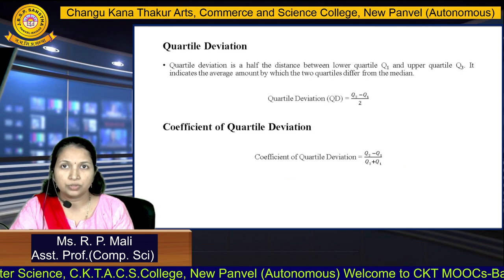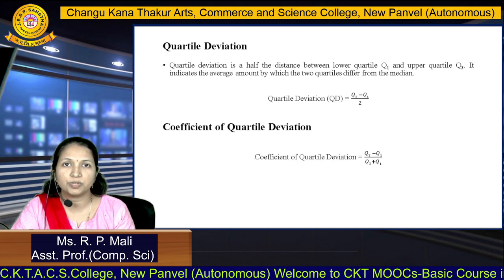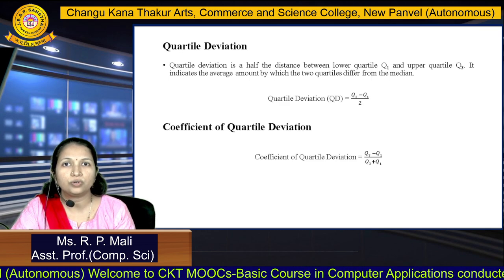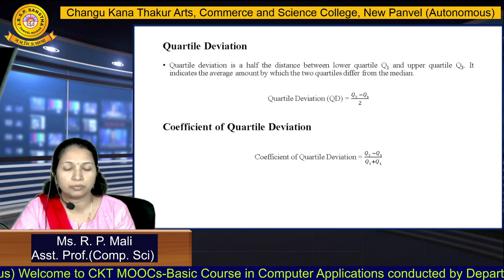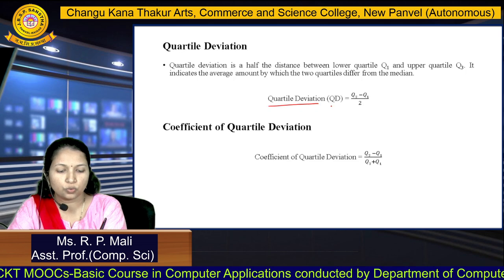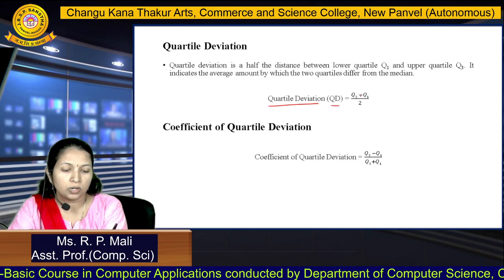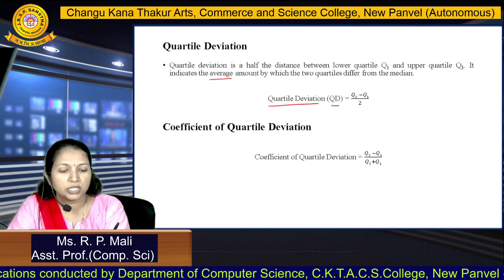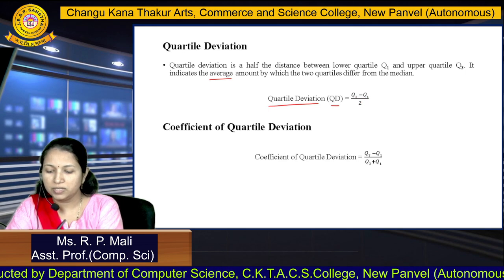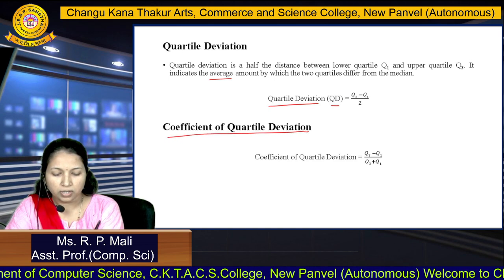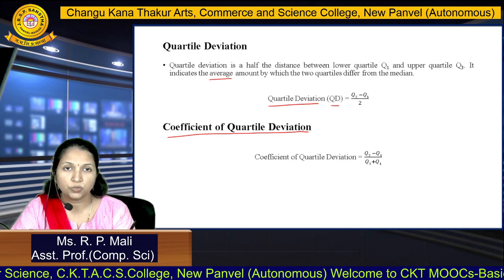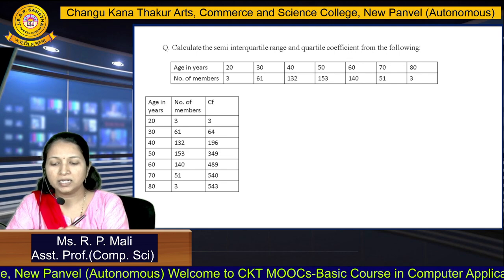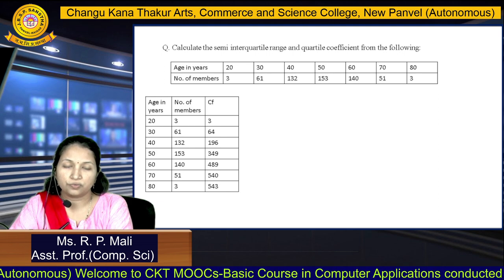After that, we have quartile deviation. Quartile deviation is the half distance between the lower quartile and the upper quartile. It indicates the average amount by which the two quartiles differ from the median. Quartile deviation is denoted by Qd and equals Q3 minus Q1 divided by 2. The coefficient of quartile deviation equals Q3 minus Q1 divided by Q3 plus Q1. We are going to solve an example based on this.